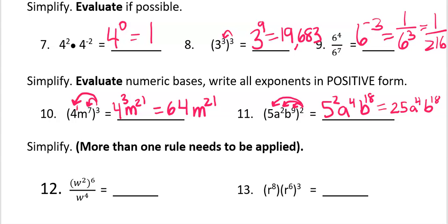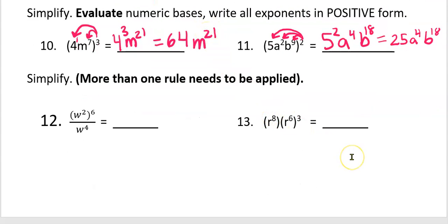Alright, now for the final two. More than one rule needs to be applied here. So I have a numerator that asks me to raise a power to a power, giving me w to the twelfth. But I have a denominator with a like base. So therefore, I'm going to subtract powers. And now I'm finished.